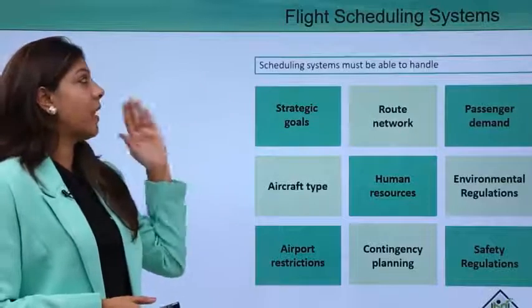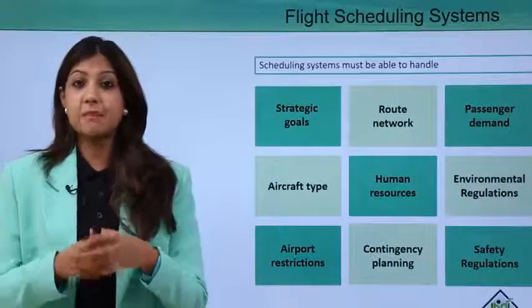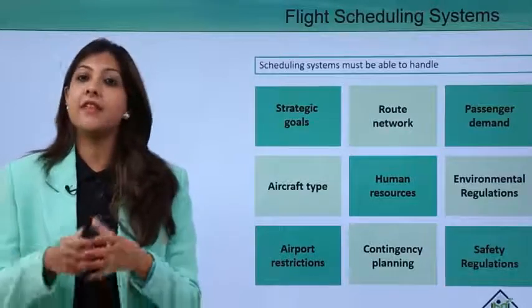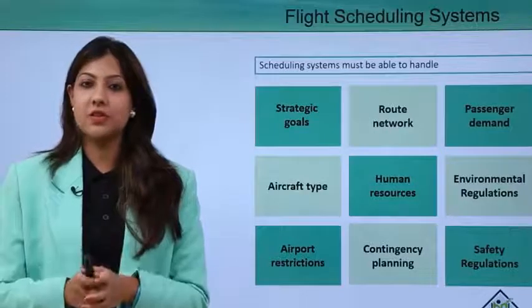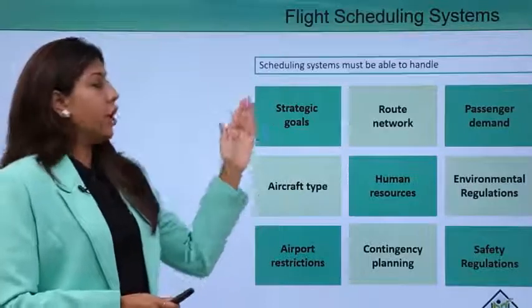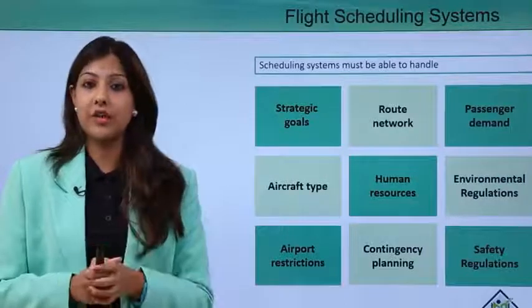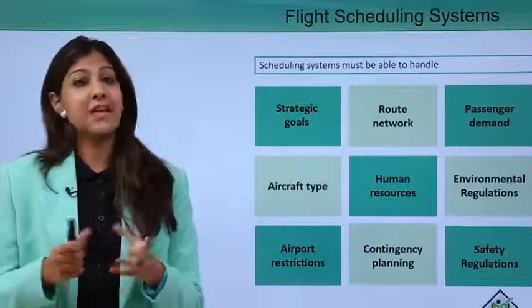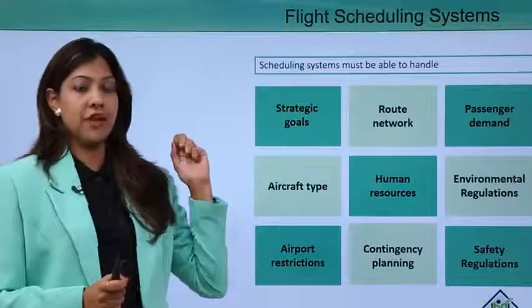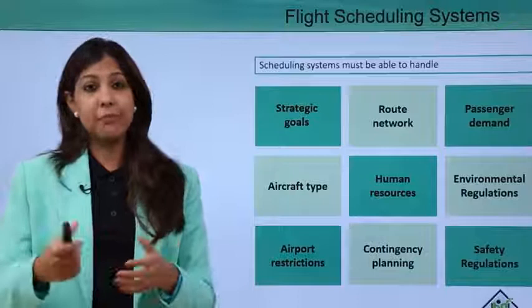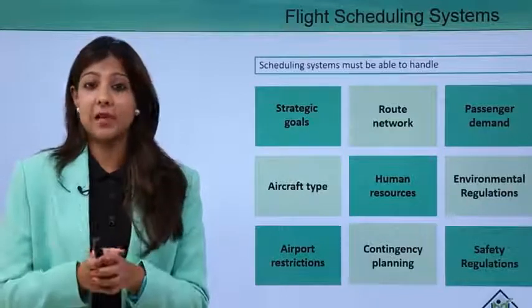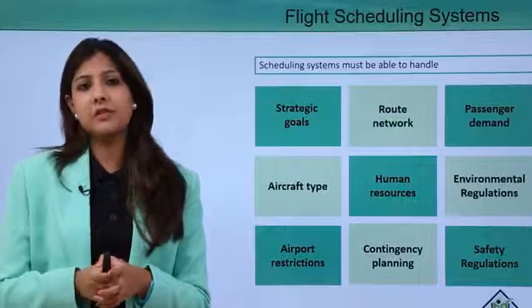Schedules are very important because passengers rely on them when planning travel, whether they are looking for morning or late evening flights. The schedules are published on airline websites. Strategic goals include the route network — airlines decide which routes to operate based on profitability. Passenger demand is another key criterion; metro cities like Mumbai, Delhi, and Bangalore have high passenger demand because they are commercial and business capitals.